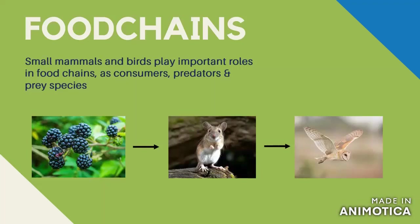For example, if we get a decline in the wood mouse population, the owl population may suffer if that is its only food source. This reinforces the importance of having a very resilient, diverse ecosystem to allow species to adapt to these changes.